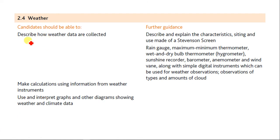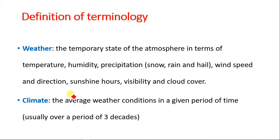The first thing we should be able to do is describe how weather data are collected using different forms of weather instruments, how to collect weather data, make simple calculations using information from weather instruments, and use and interpret graphs and other diagrams showing weather data and climate data.